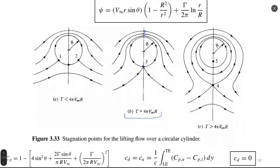On the top of the cylinder, pressure is smaller than the lower pressure. So we have upper and lower pressure distributions, and the lower pressure is smaller than the upper pressure. Because of this, we have lift. This happens for all three flow patterns. When circulation is smaller than 4πV∞R, we have two stagnation points whose positions can be found analytically.